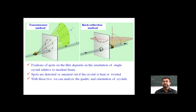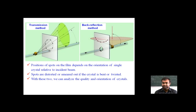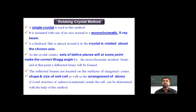Another mode is the back reflection method. The position of the spot on the film depends on the orientation of the single crystal relative to the incident beam. The spots are distorted or smeared out if the crystal is bent or twisted. With these two modes, we can analyze the quality and orientation of the crystal.